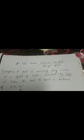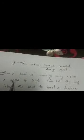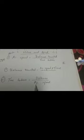In this example, a boat is cruising along a river at a speed of 3 meters per second. Calculate the time it takes the boat to travel a distance of 270 meters. So the speed is 3 meters per second and the distance is 270 meters. The question is asking for time, so for calculating time we will use the formula: time equals distance divided by average speed.